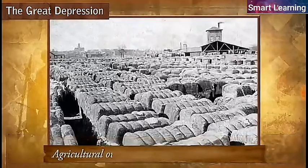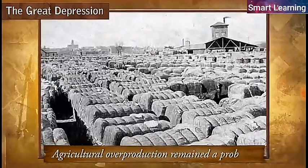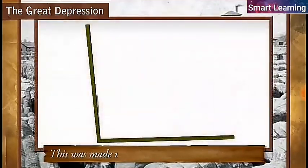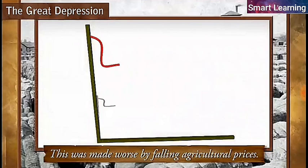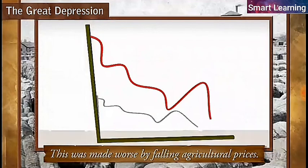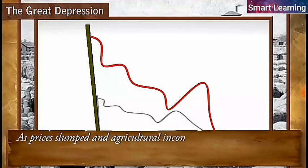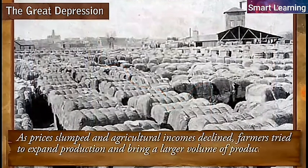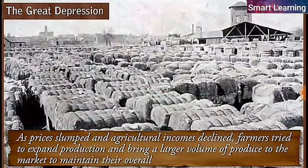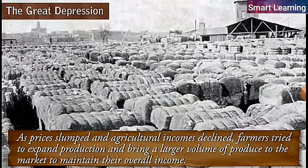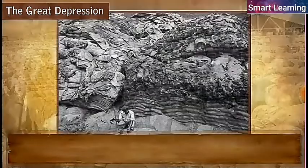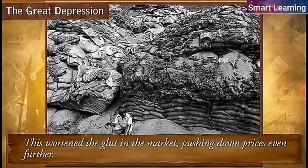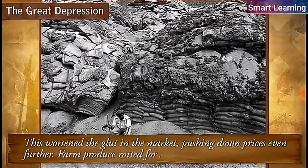First, agricultural overproduction remained a problem, made worse by falling agricultural prices. As prices slumped and agricultural incomes declined, farmers tried to expand production and bring a larger volume of produce to market to maintain their overall income. This worsened the glut in the market, pushing prices down even further. Farm produce rotted for lack of buyers.